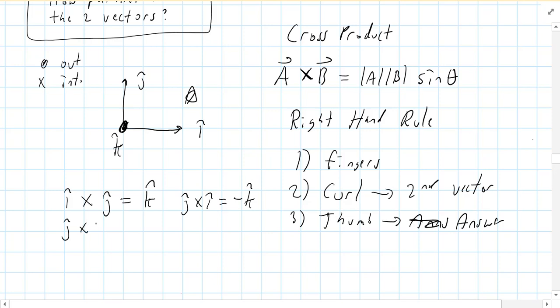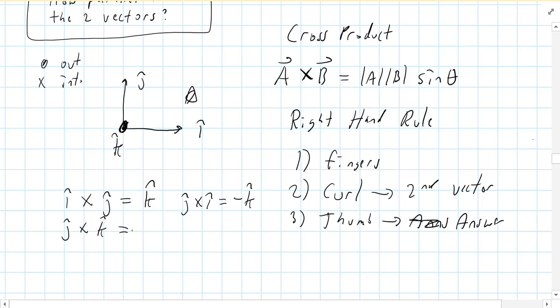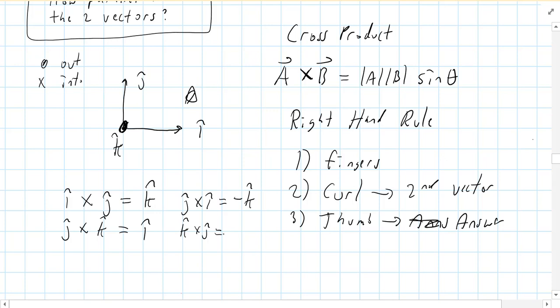Let's try j cross k. Point your fingers up, rotate your hand until your fingers curl out of the page, then stick your thumb out — it should point to the right, in the i-hat direction. Now try k cross j: start with your fingers pointing out of the page, rotate until you can curl your fingers up the page, and your thumb should point to the left — the negative i-hat direction.